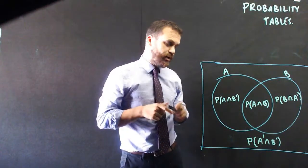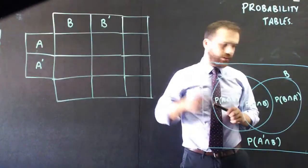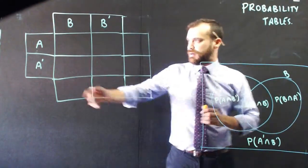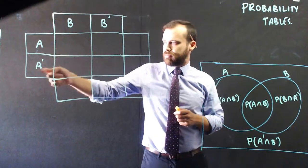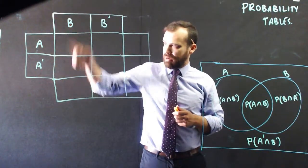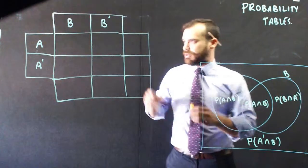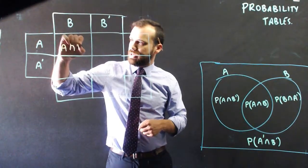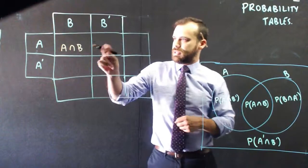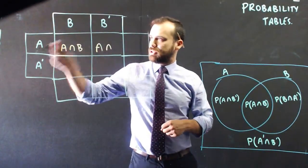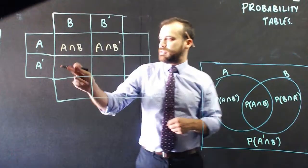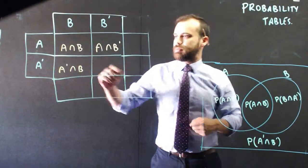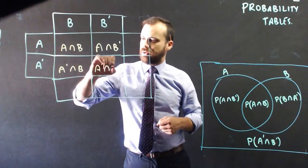We can do this in a different way using a probability table. This is a probability table. The way it works: this is the probability of A happening, this is the probability of A not happening, this is the probability of B happening, this is the probability of B not happening. So this cell is the probability of A intersection B, this is A intersection not B, this is not A intersection B, and this is not A intersection not B.